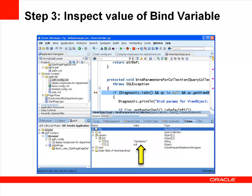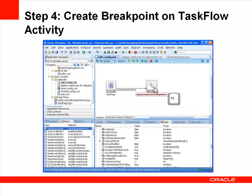Inspect the value of the bind variable in the data tab of the debugger. In this case, we see that the value is null just before the query executes for the employees view object, so that's the issue that needs resolving. To determine what's causing the null value, we can start by setting a breakpoint for the taskflow call from the unbounded taskflow.